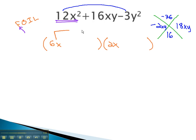Continuing to factor, the 6x is multiplied by something on the outside, and the 2x is multiplied by something on the inside.